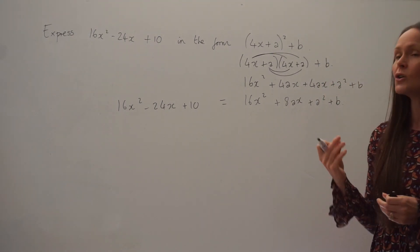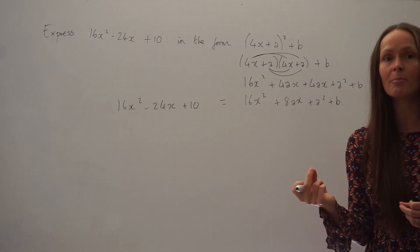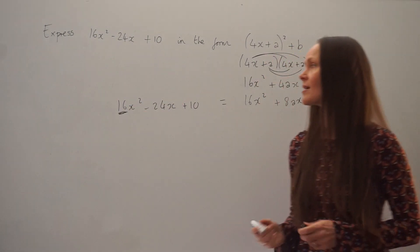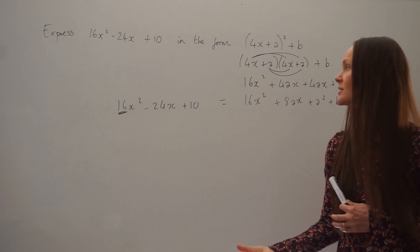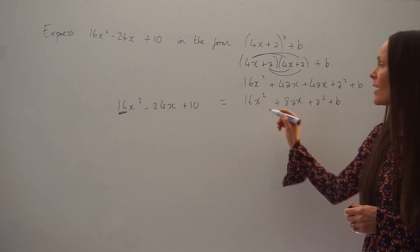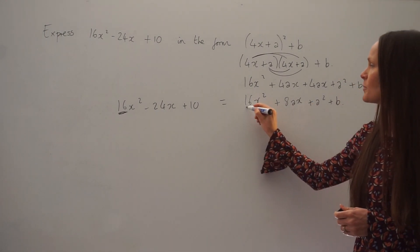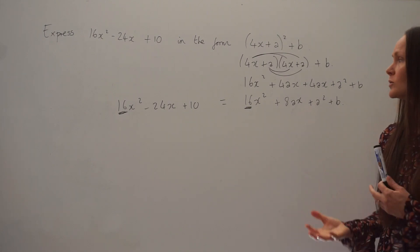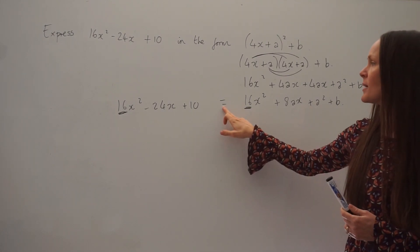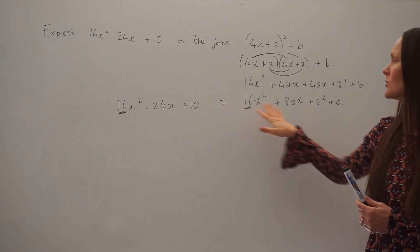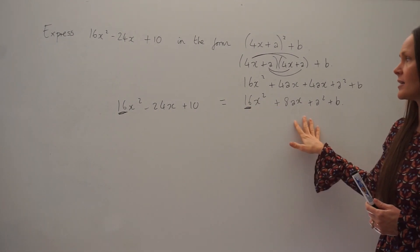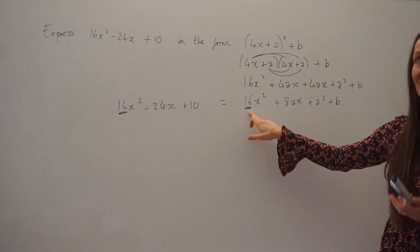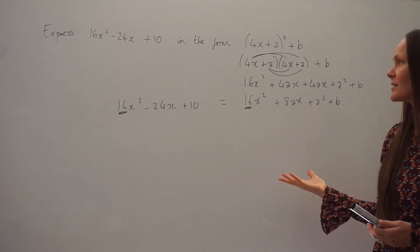So when we compare the coefficients, what we're doing is just looking at the number in front of, for example, the x squared on the left-hand side, and comparing it with the number on the right-hand side that's being multiplied with x squared. They should always be equal to each other, because the left-hand side equals the right-hand side. So we can expect 16 to be the same as the number on the right-hand side, which it is.